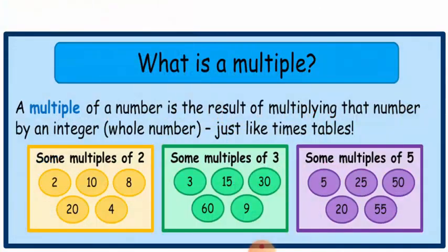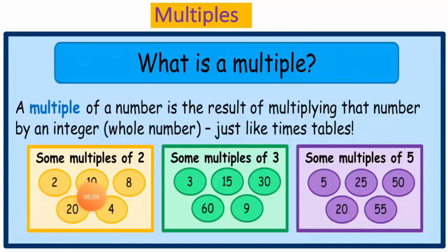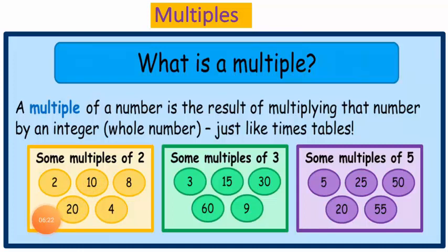Now let's move to the next topic: multiples. A multiple of a number is defined as the product obtained when the given number is multiplied by the same or by any other number. On the screen you can see multiples of two: two times one is two; two times two is four; two times four is eight; two times five is ten; two times ten is twenty. Similarly, multiples of three and five are also shown on the screen.